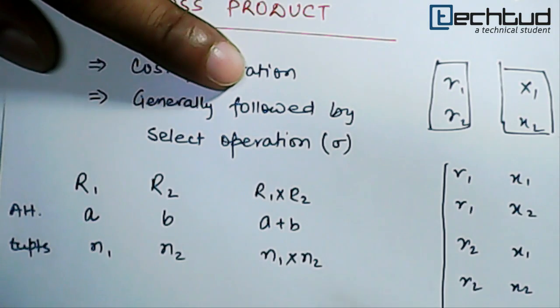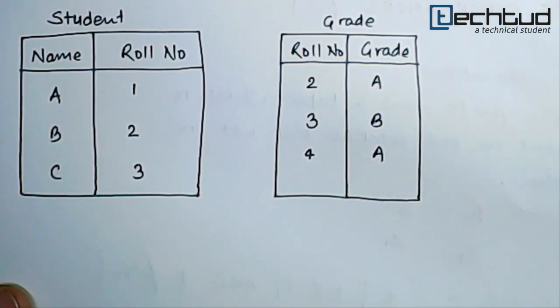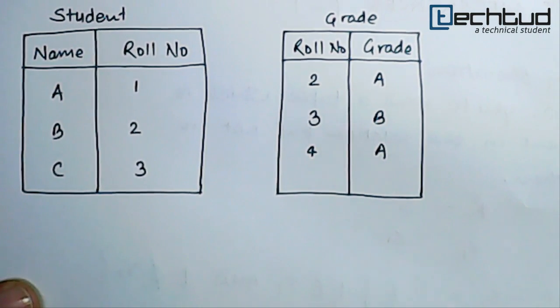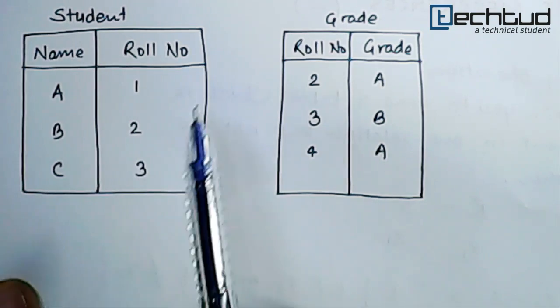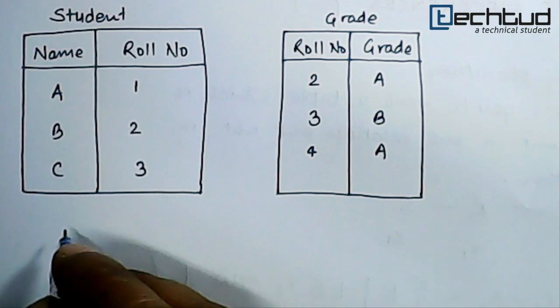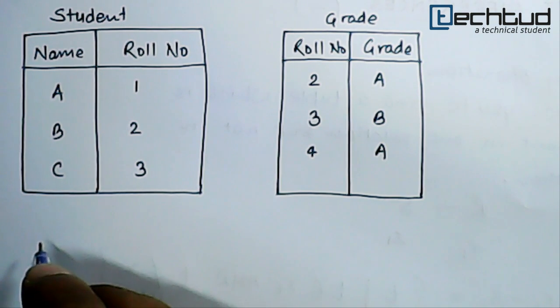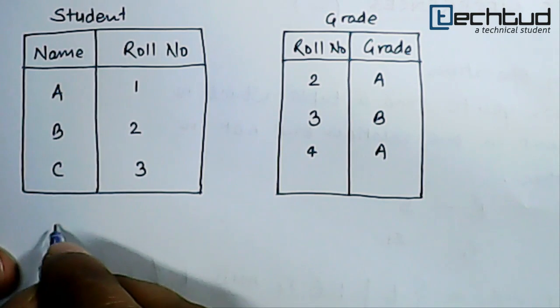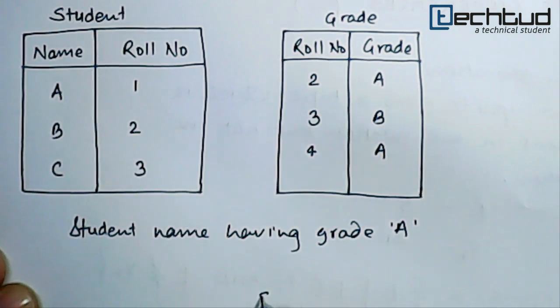Now let's take an example on this. So here we have two tables and we have to find out cross product between these two tables, and these relations are student and grade. So let's consider a scenario where we have to find out the student name whose grade is A. So first of all what we will do, we will find out the cross product between these two relations, that is student cross grade.